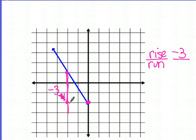And my run, 1, 2. Some people want to say that that's negative 2, but I'm actually moving in the positive direction towards the positive numbers. So that is a positive 2. My slope, then, would be negative 3 over 2.